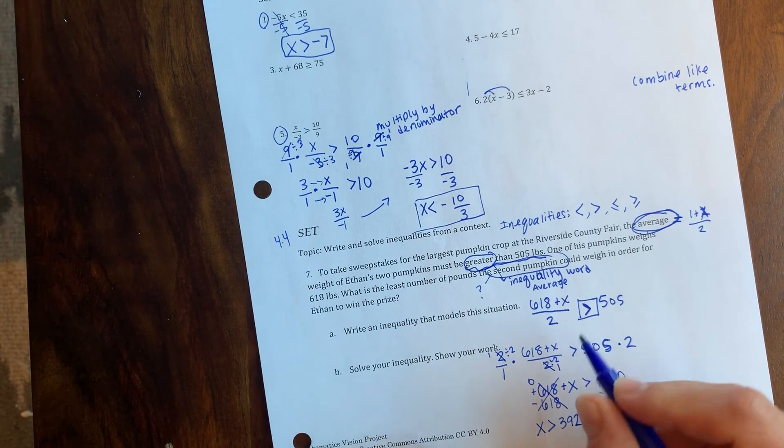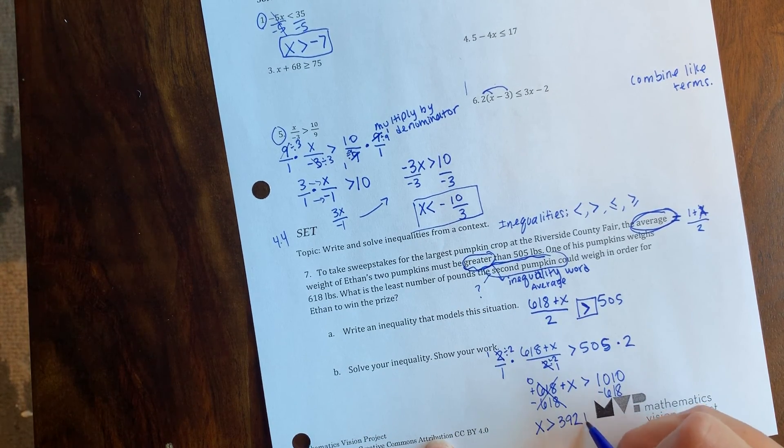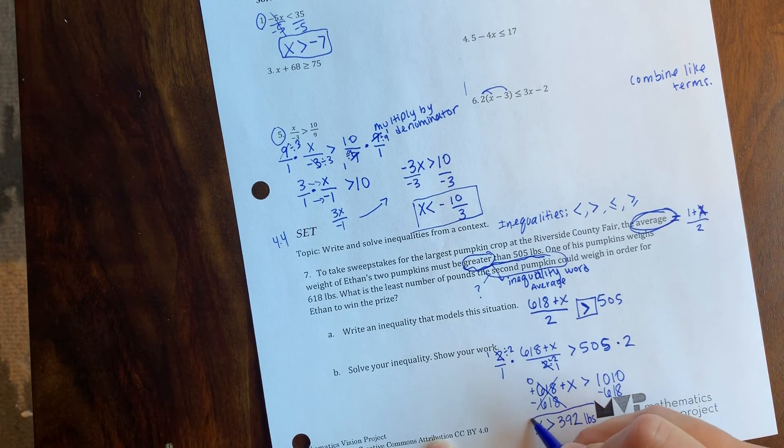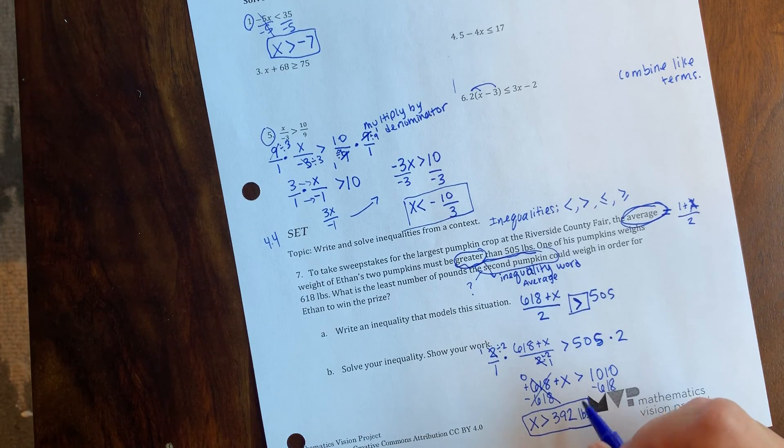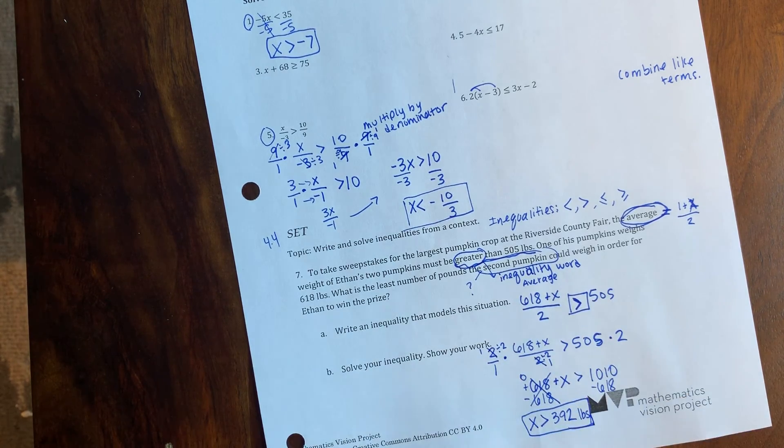And we're talking about the weight of a pumpkin, so it needs to be pounds. If it's greater than 392 pounds, that average is greater than 505.